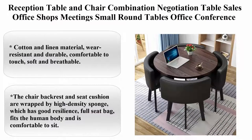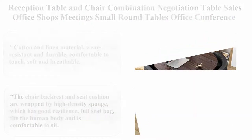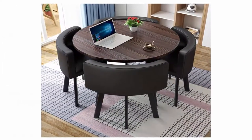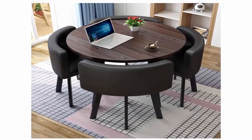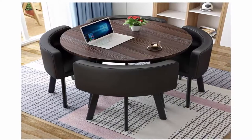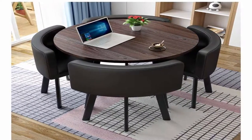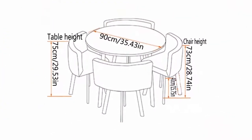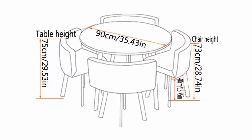Reception table and chair combination. Negotiation table, Sales office, Shops meetings, Small round tables, Office conference tables, Leisure tables and chairs, Hotel lounges, Balcony, Western restaurant. Cotton and linen material. Wear resistant and durable. Comfortable to touch. Soft and breathable. High quality PU leather. Smooth and wearable. Clear and natural texture.